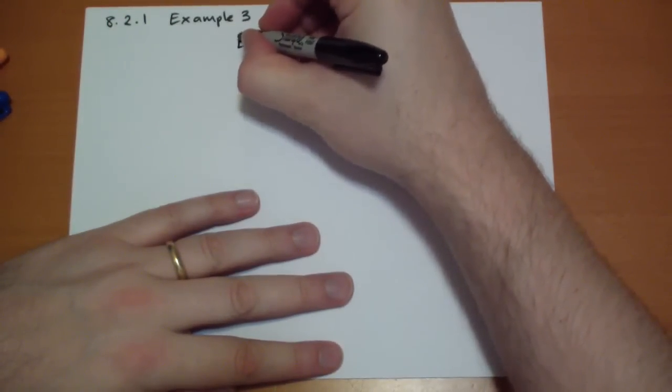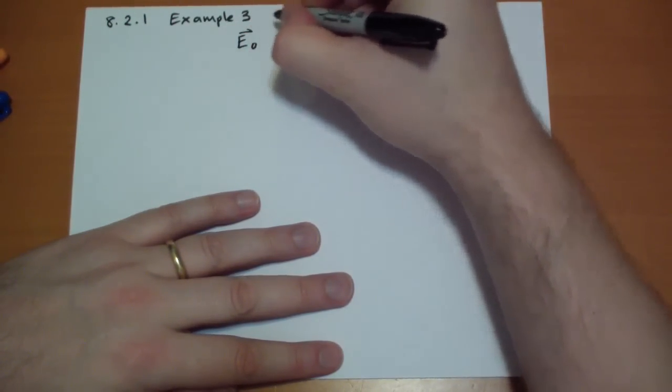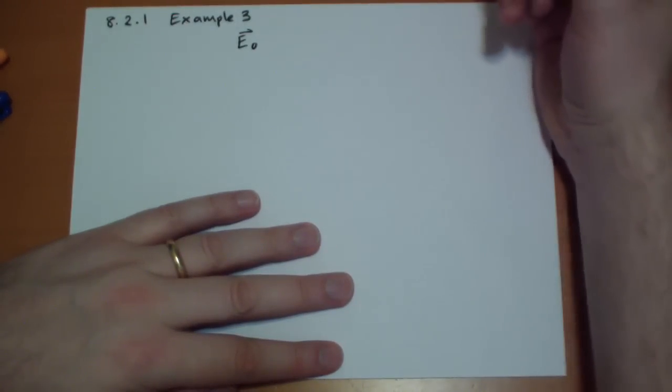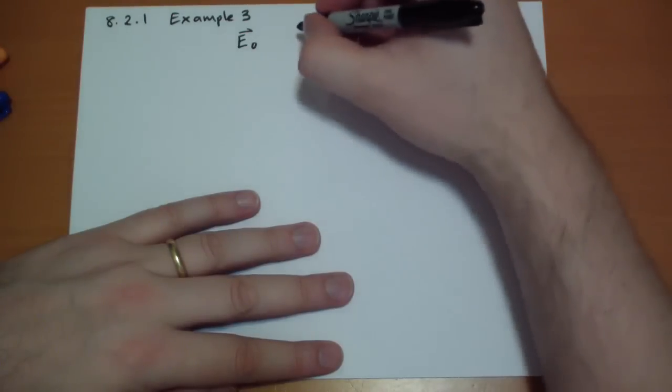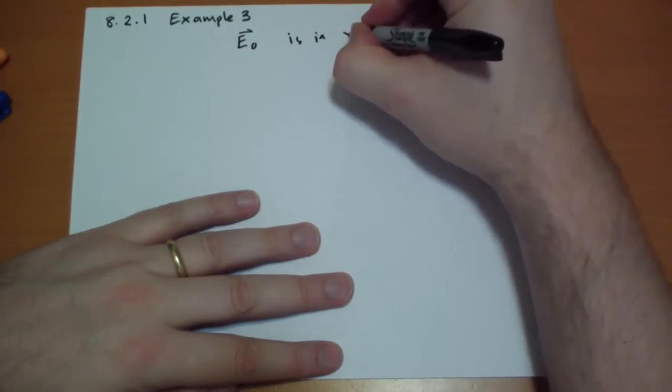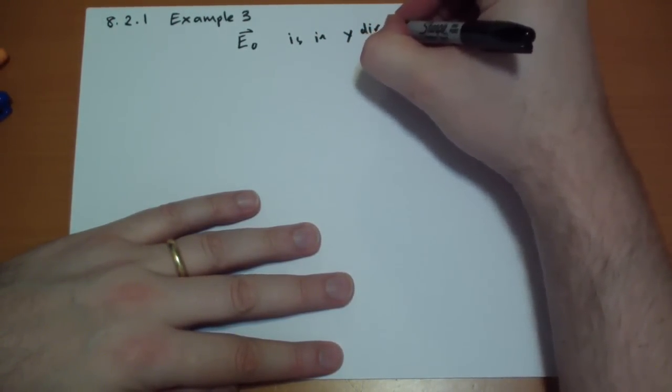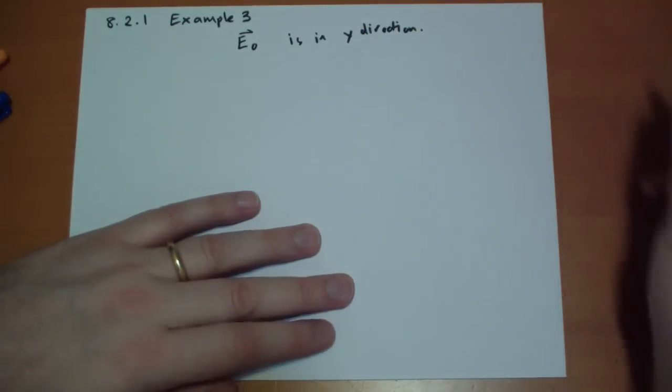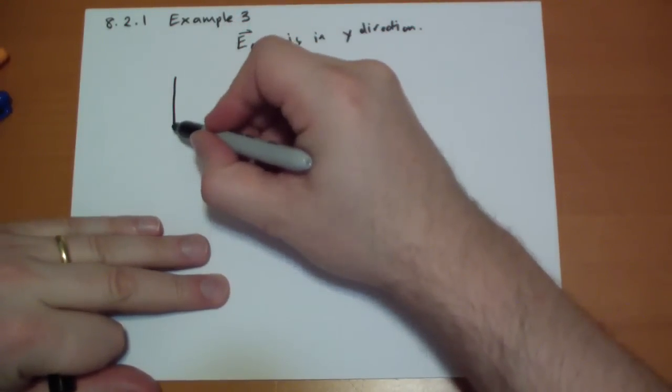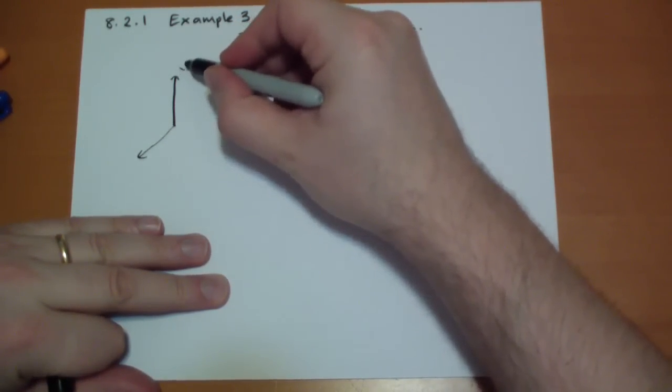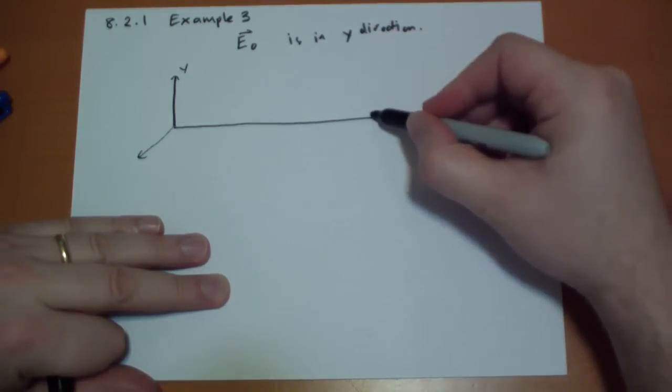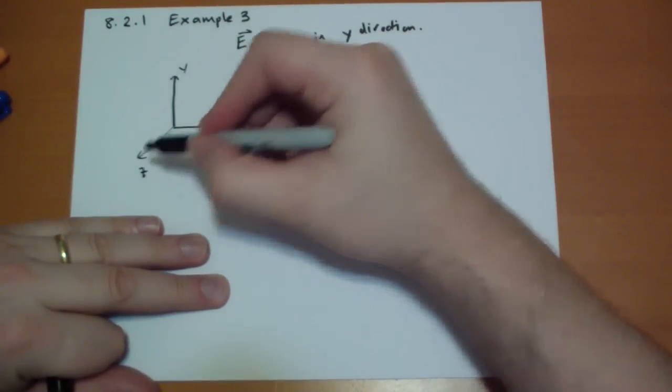So if we have, if E points in the direction, so we say, let's assume that E-naught vector points in the Y direction. Okay, so the E-naught wave, let's draw up the axis here: Y, X, and Z.